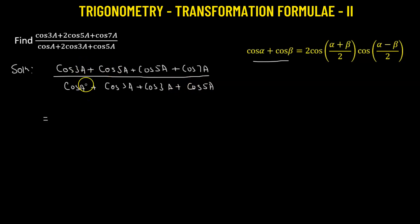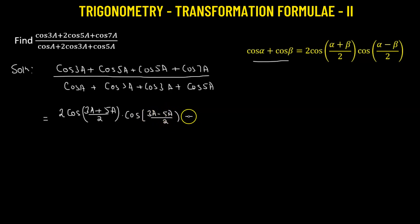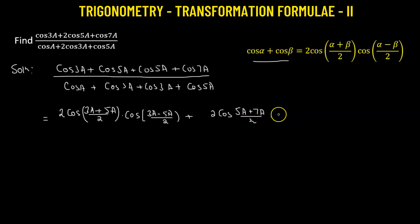Now let us add the first two terms: cosine of 3a and cosine of 5a. Using the formula, we get two times cosine of angle (3a + 5a)/2, multiplied by cosine of (3a − 5a)/2. For the next sum, cosine of 5a plus cosine of 7a gives two times cosine of (5a + 7a)/2, multiplied by cosine of (5a − 7a)/2.